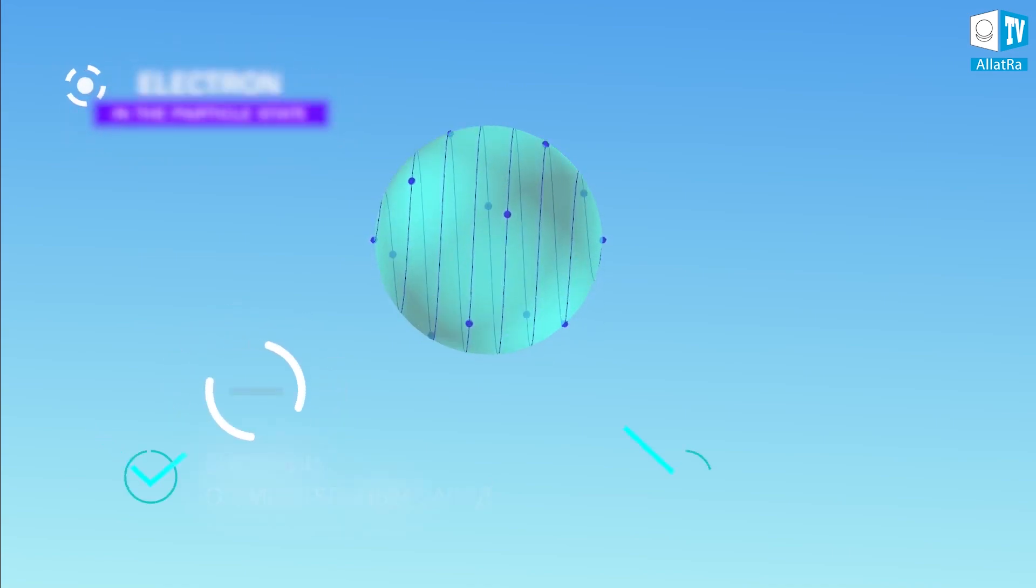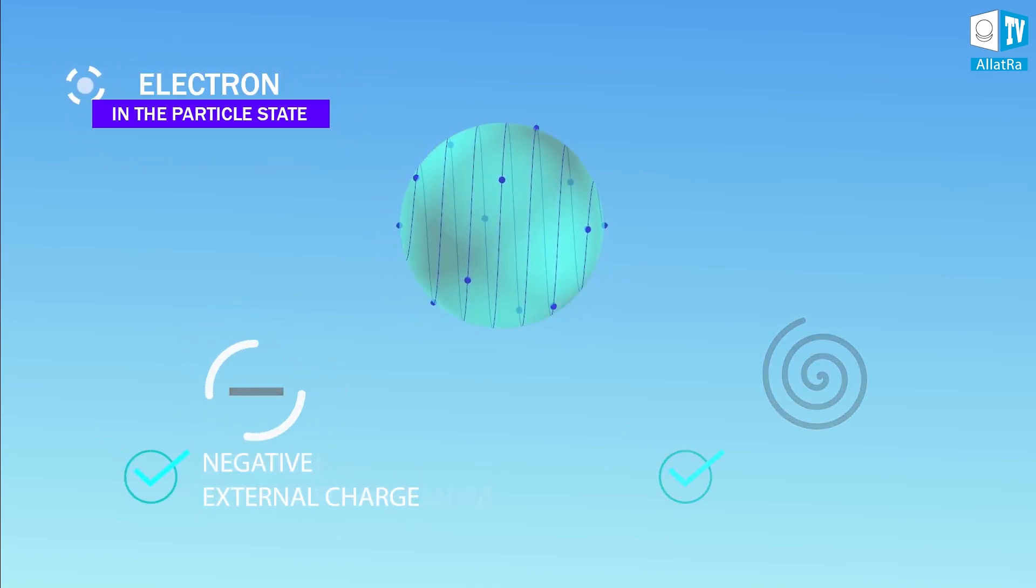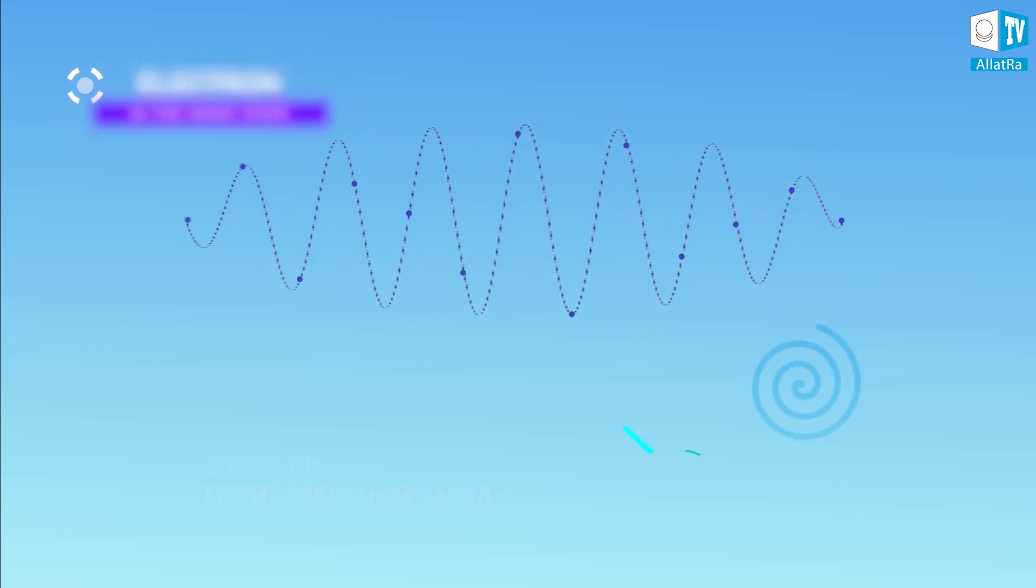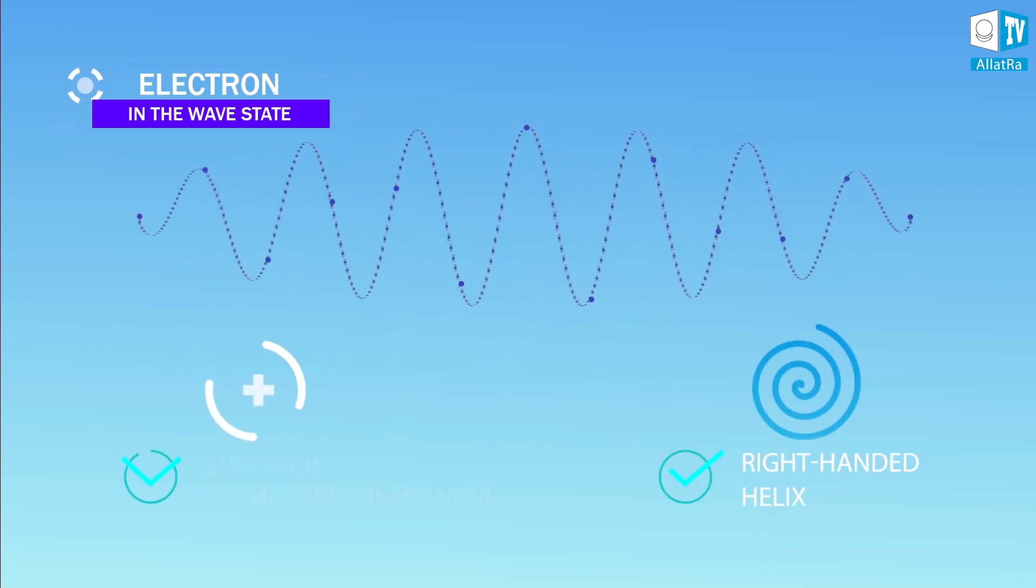In the particle state, the electron has a negative external charge and a left-handed helix. And in the wave state, it has a right-handed helix and a positive external charge.